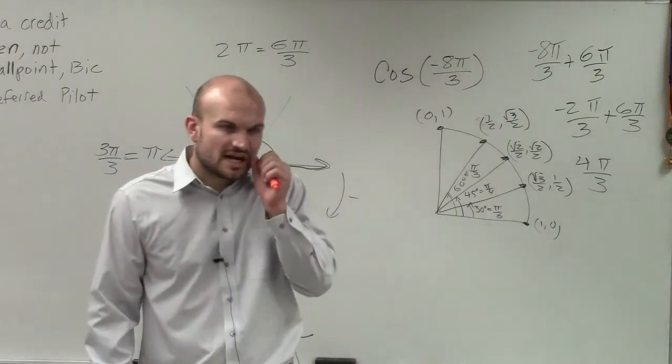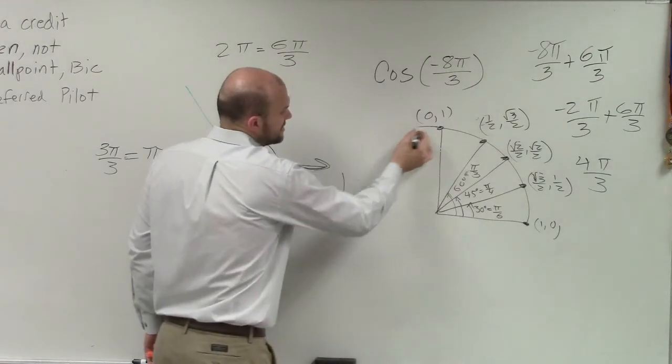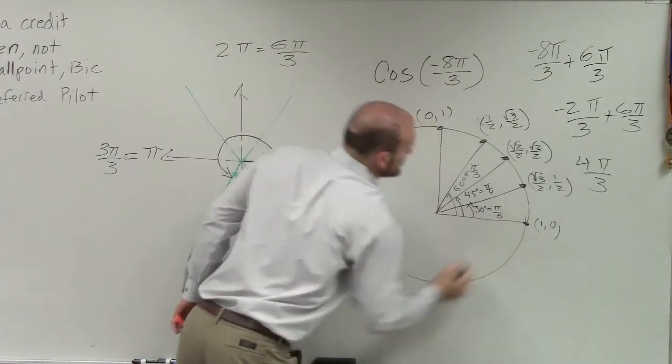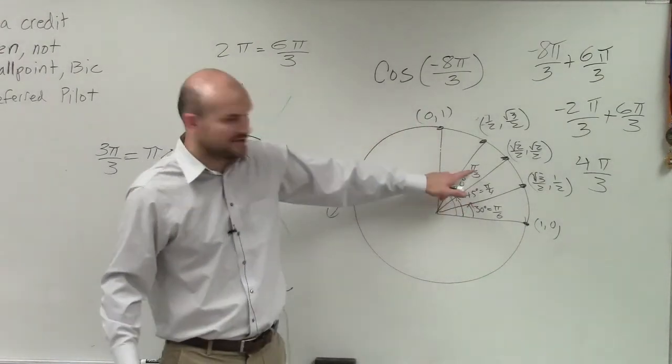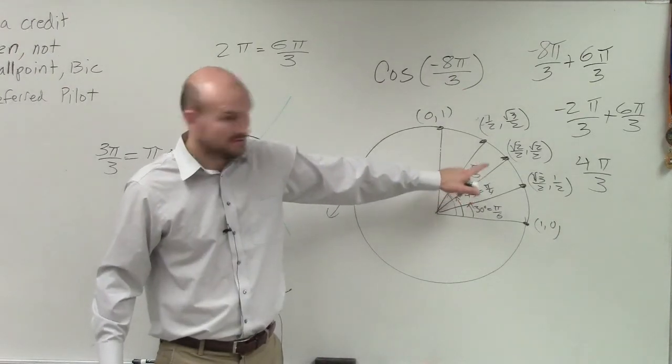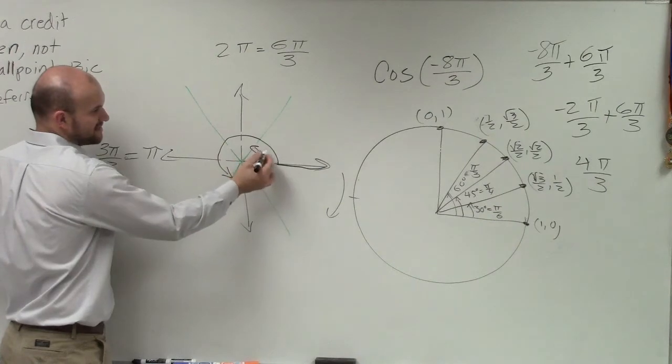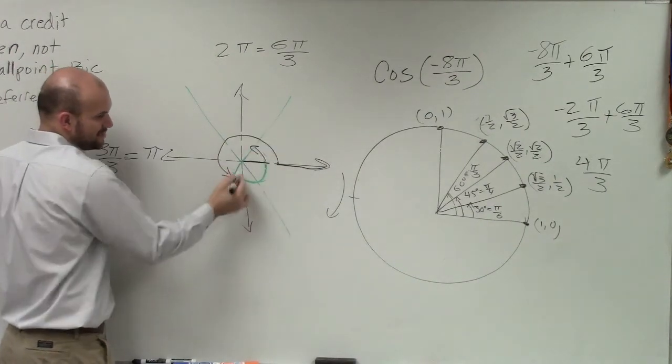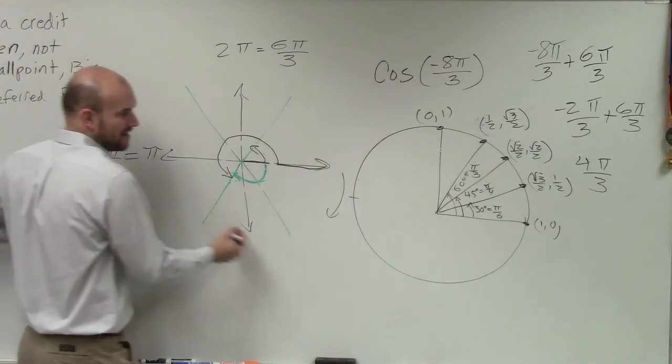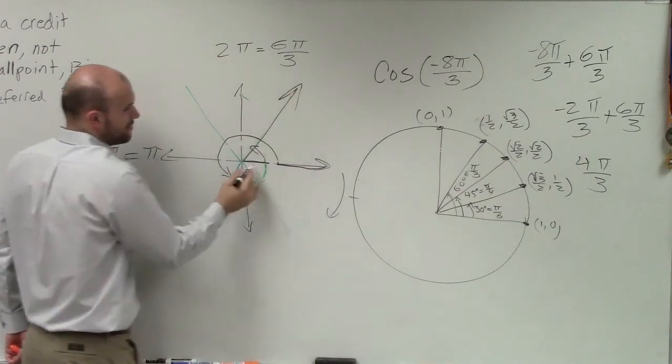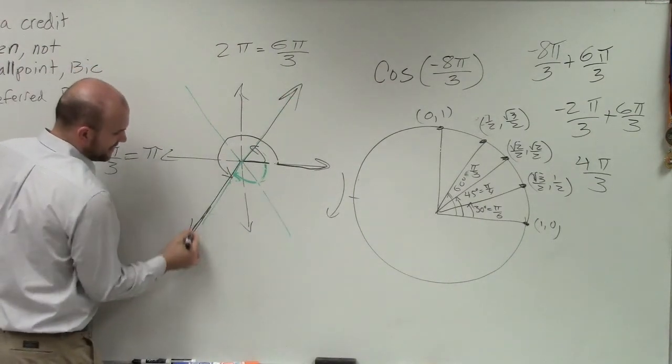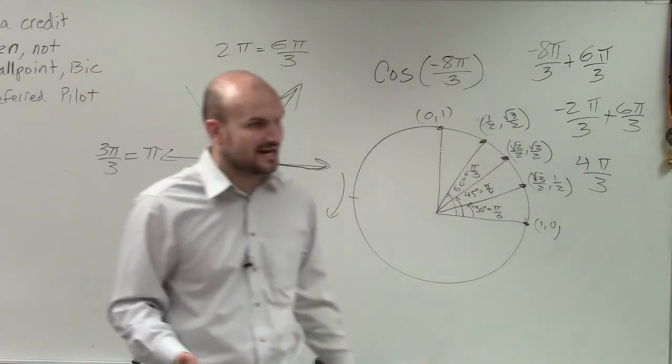So when we're looking at our unit circle, if this is π thirds, this is π thirds. And what we're trying to do is, well, if this is π thirds here, you guys can see that these two lines are reflections of each other, right? You guys see how this line for π thirds is a reflection of that line, which is where our terminal side is?